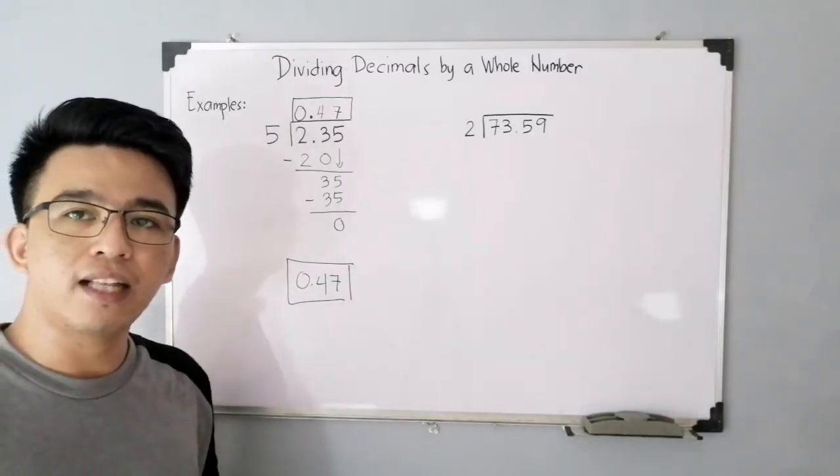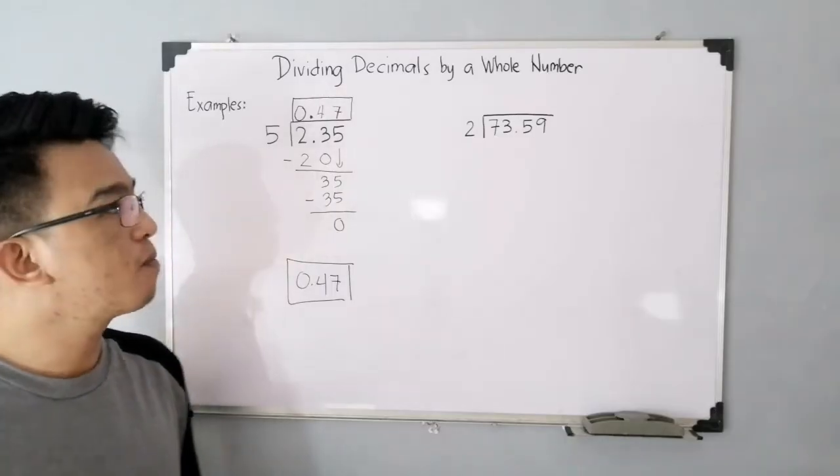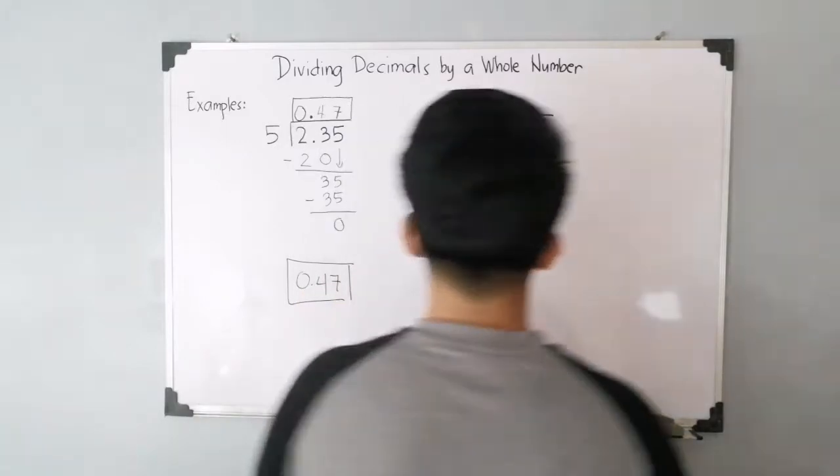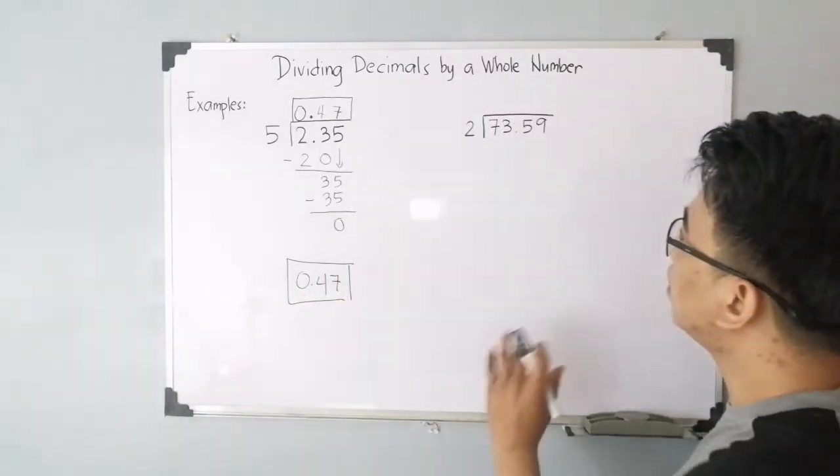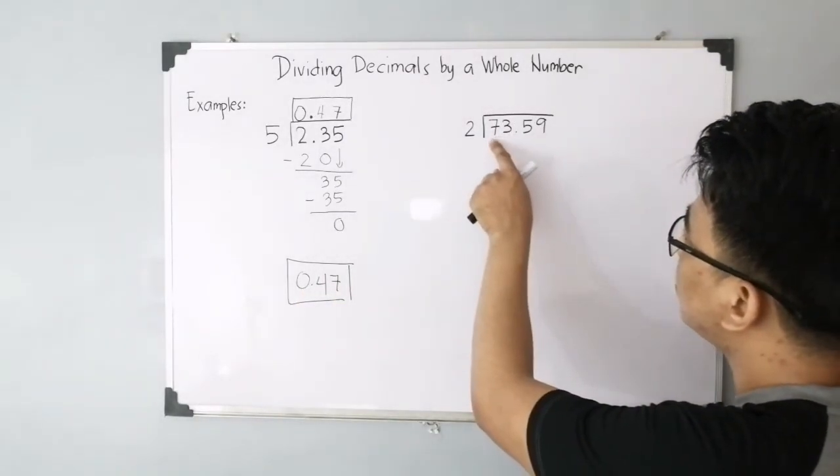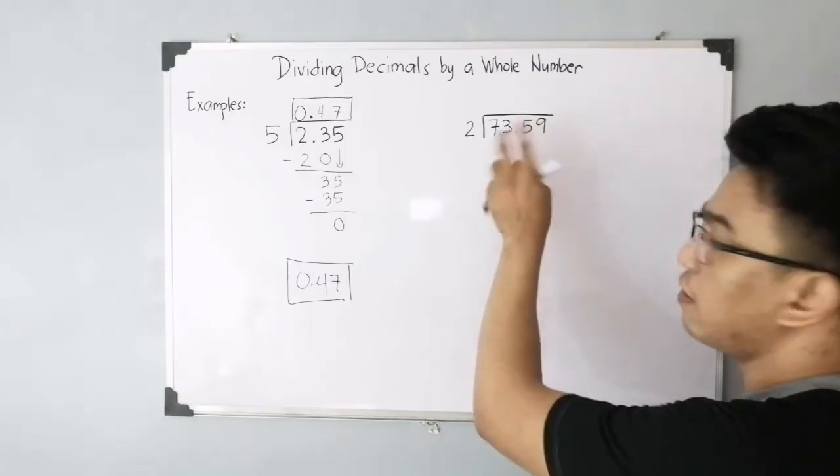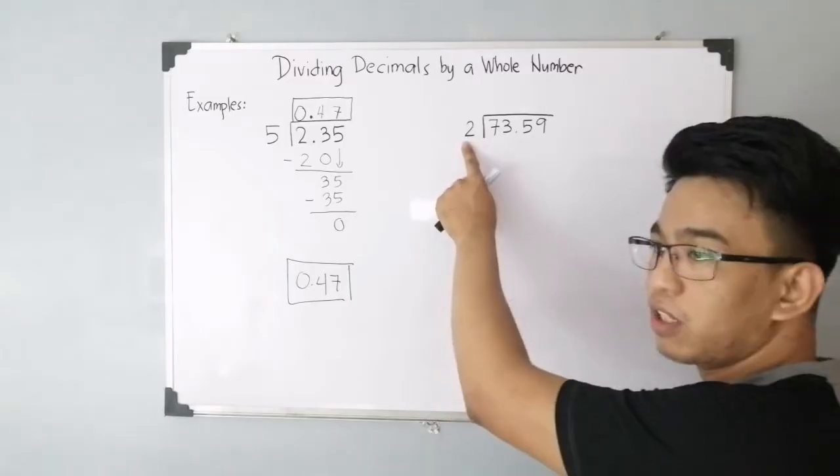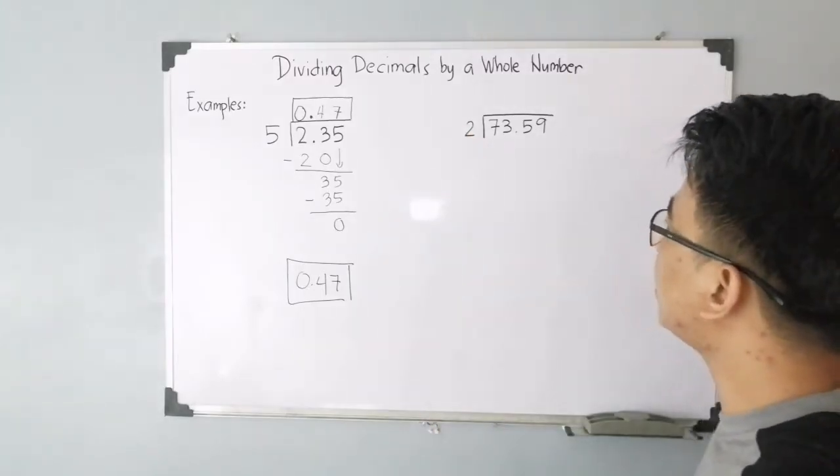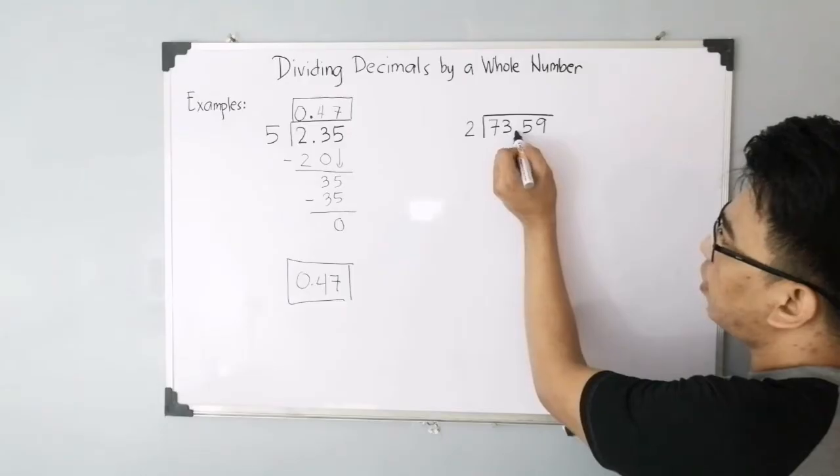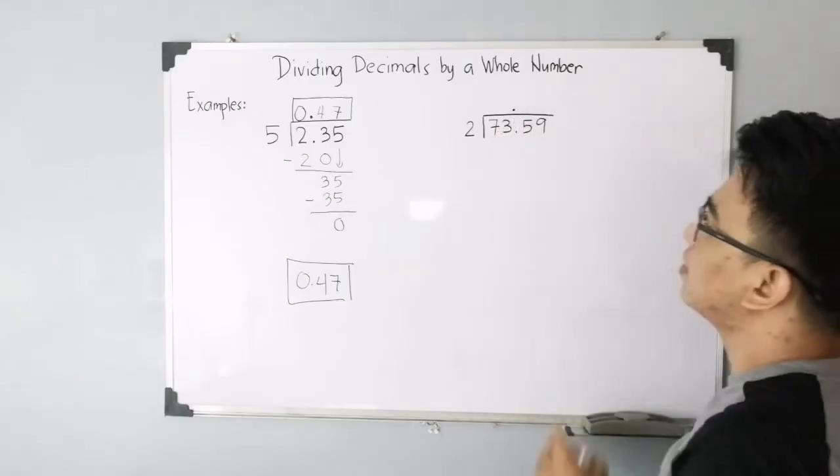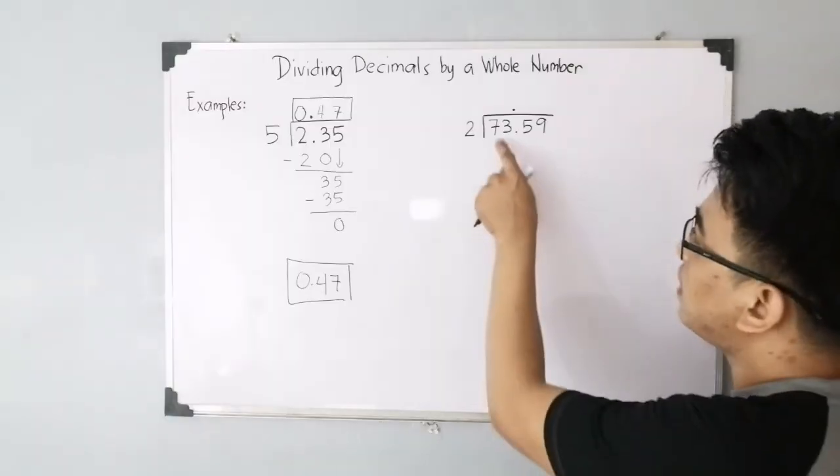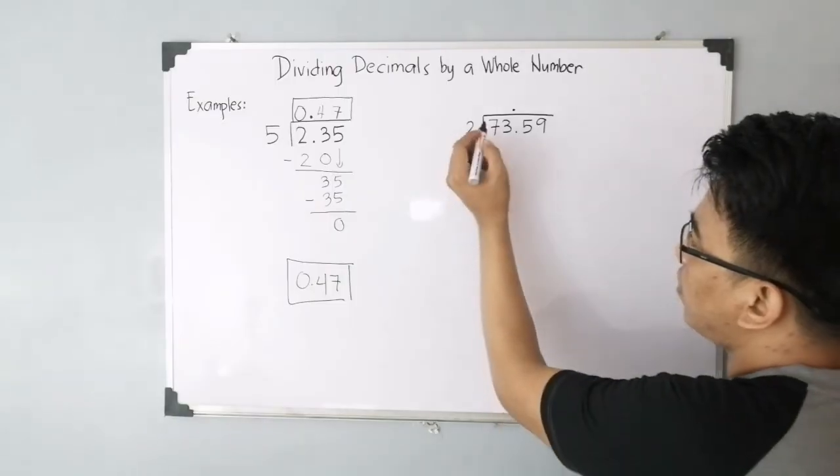Now let's proceed with item number 2. For item number 2, we are given this decimal 73.59 divided by 2. Again, this is your dividend and this is your divisor, which is a whole number. First step: this is your decimal point, let's put it in the same column. And then normal division: you have 7 divided by 2, that is 3.